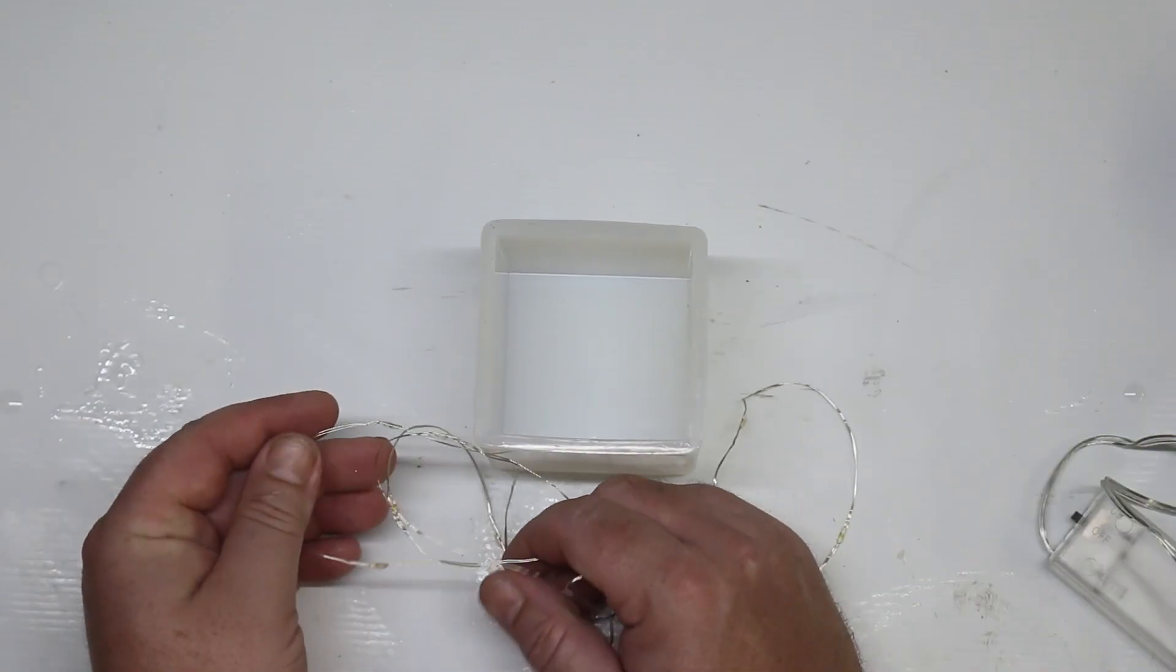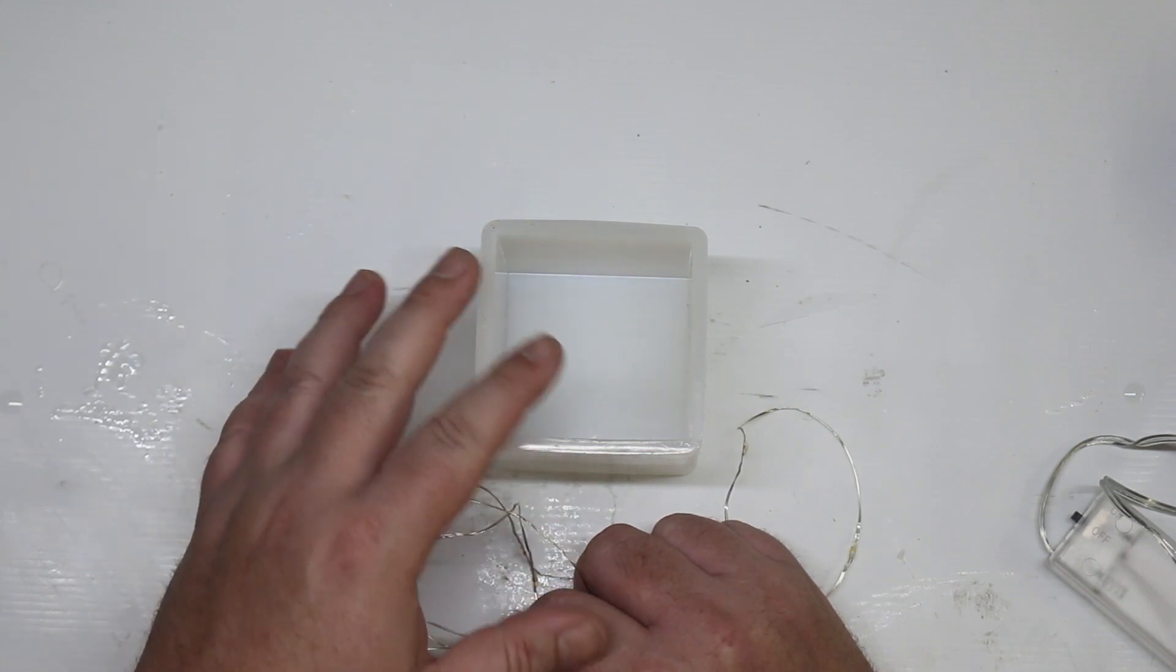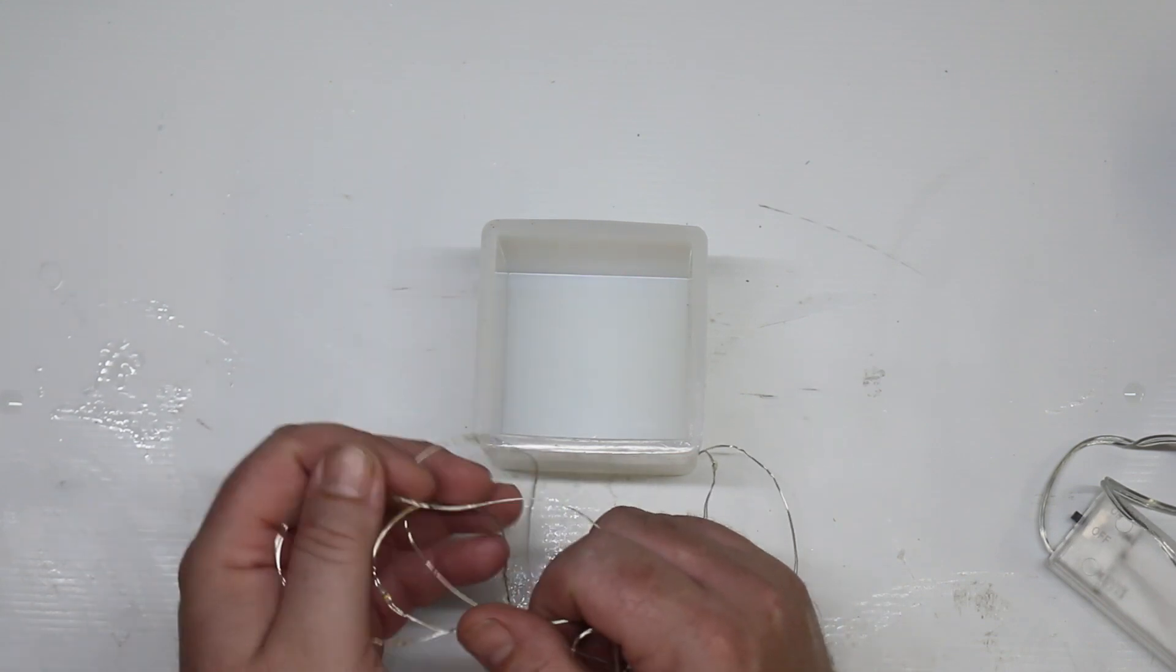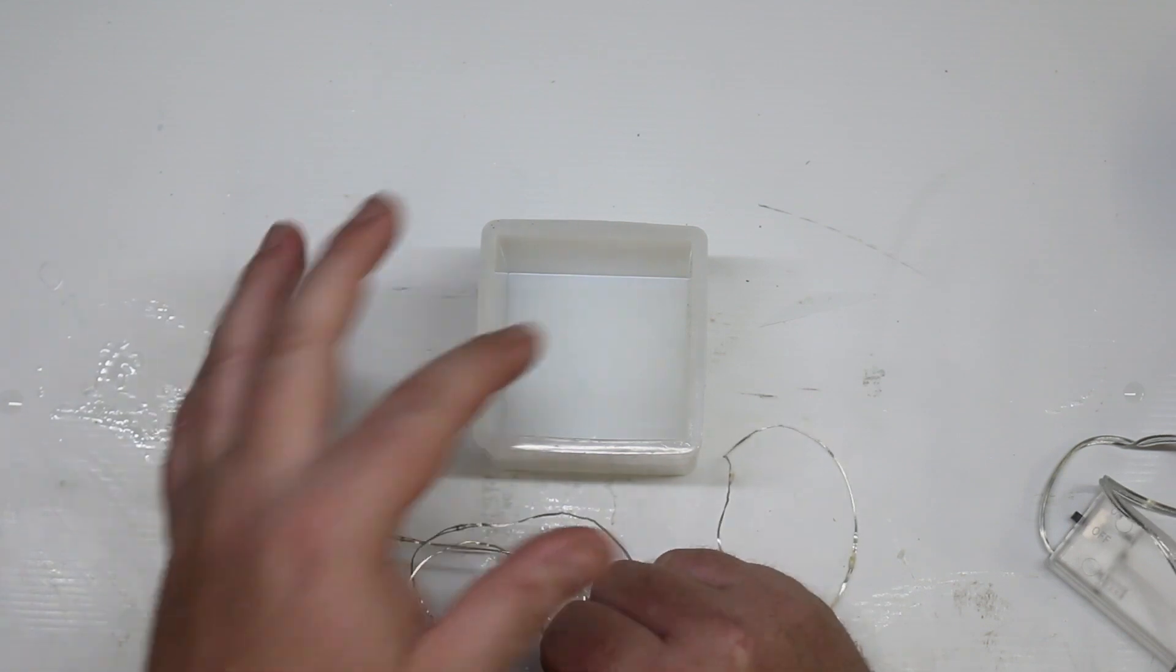Now that we know that our lights work, the next thing we need to do is position them in the mold. There's no right or wrong way to do this, I'm just going to scrunch it up into kind of a ball shape and put it in.